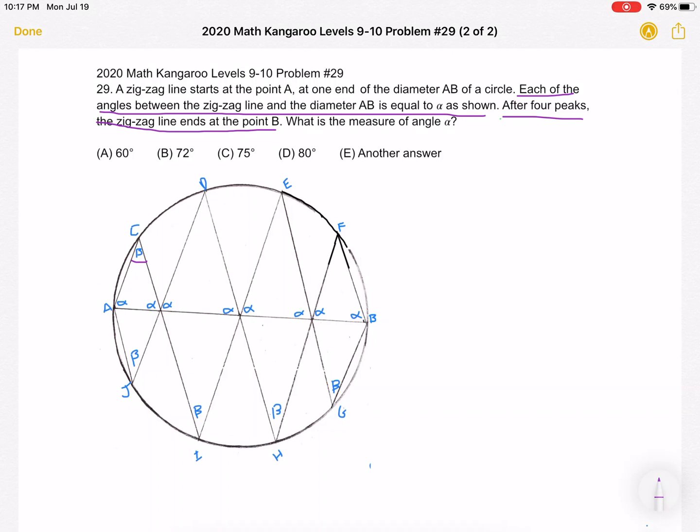So each isosceles triangle has two angles of measurement alpha, and then I labeled the vertex angle as a measurement of beta. So right now, we know that two alpha plus beta is equal to 180 degrees, because these are the three angles that form a triangle, and the sum of the angles of a triangle is 180. So we want to come up with one more relationship between alpha and beta, and once we have that, we'll have two unknown variables, two equations,